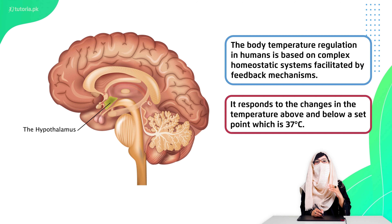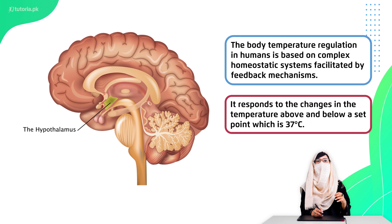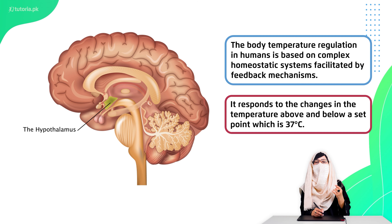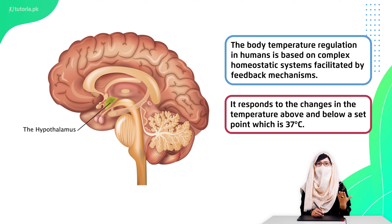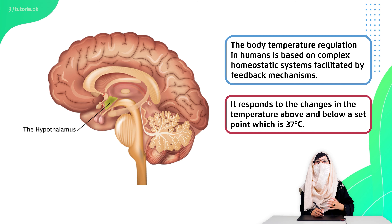If the temperature is 37°C or less, the hypothalamus will perform the appropriate mechanism. If the temperature drops below 37°C, our body will start heat production. If the temperature rises above 37°C, our body will produce a cooling effect so that the body's temperature is brought back to 37°C.